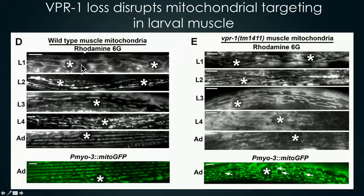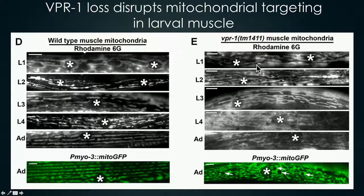At the L1 stage, the mitochondria are largely perinuclear with branches that extend into the muscle cytoplasm. In our VPR1 null mutants seen here on the right-hand panel, it looks pretty similar to our control at L1. However, what we don't see is the mitochondria forming associations with the I-bands throughout larval development. What we do see are fission and fusion defects, and we also see metabolism defects where there is lipid accumulation in the muscle belly, indicated by the little white arrows here.